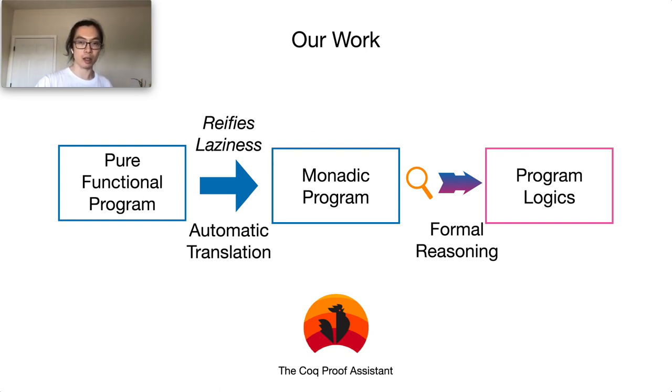The key feature of our framework is its simplicity. The clairvoyant monad is very easy to define. In fact, it can be defined using around 20 lines of Coq code. And the program logics enable modular reasoning. Now, let's look at the first part of our method.